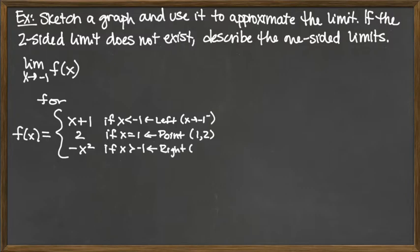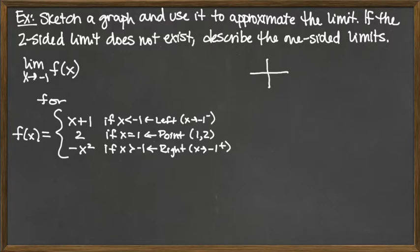So we'd be looking as x approaches negative 1 from the right-hand side. That's what we're going to read off of each piece of the piecewise defined function, but we want the whole graph so we can see what's happening. The way I graph piecewise defined functions is to look at each individual piece separately.